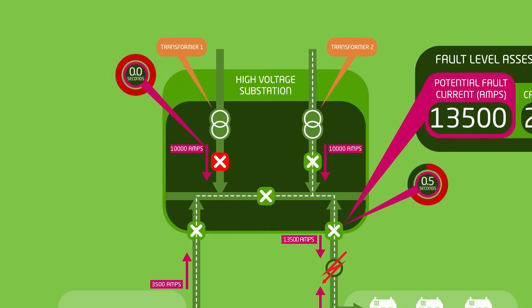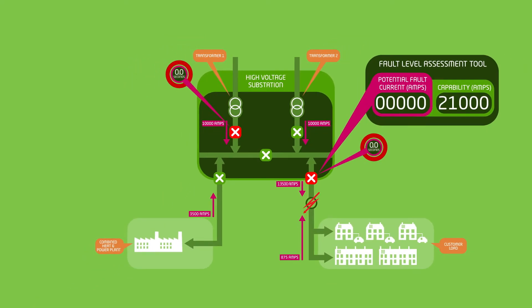Here, the circuit breaker on transformer one trips one second after a fault, taking away 10,000 amps from the fault current, enabling the existing high voltage circuit breaker to operate within its capability. After one and a half seconds, the HV circuit breaker trips. This sequence tripping allows the existing equipment to manage a network with higher fault currents than it was designed for.